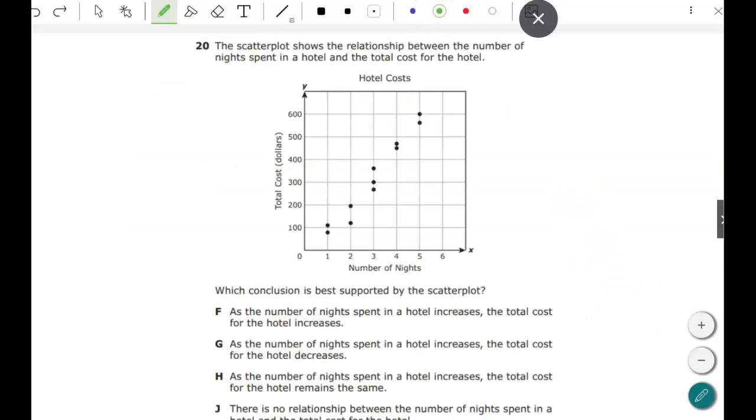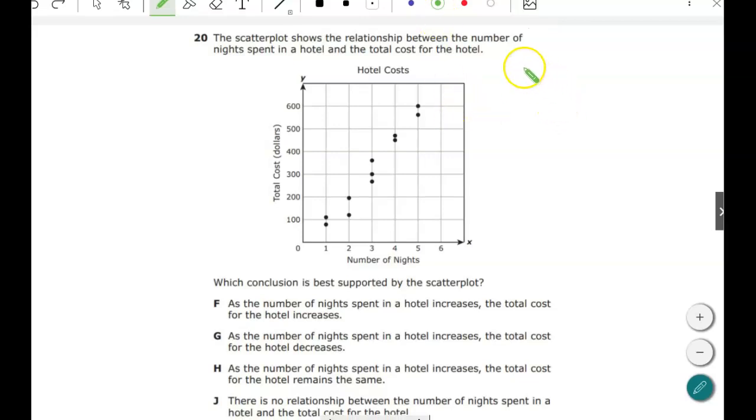All right, number 20. Let me move this down a little bit. All right, so the scatter plot shows the relationship between the number of nights spent in a hotel and the cost of the hotel. You can see the points plotted. Which conclusion is best supported by the scatter plot? As the number of nights spent in the hotel increases, the total cost of the hotel increases. I would say that is a true statement. What's wrong with the next one? As the number of nights spent in a hotel increases, the total cost decreases. No. As the number of nights spent in the hotel increases, the total cost remains the same. No. And there's no relationship. That's not true either. It's F.